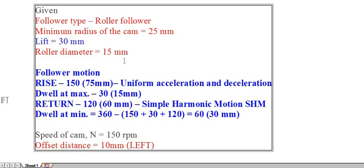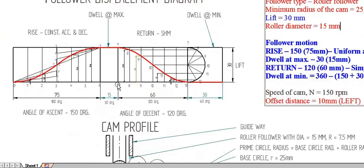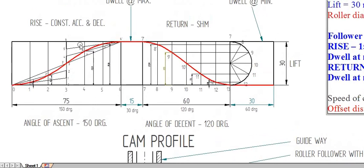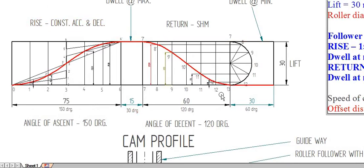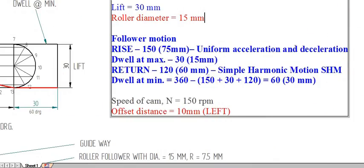The speed of the cam is 150 RPM and the offset distance is 10 mm. The follower displacement is: rise for 150 degrees using constant acceleration and deceleration, then dwell for 30 degrees, then return using SHM for 120 degrees, and minimum rest for 60 degrees.